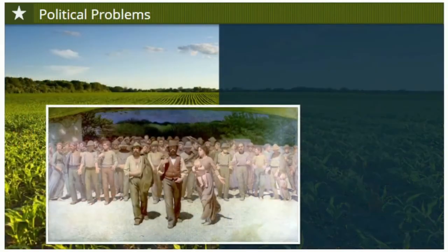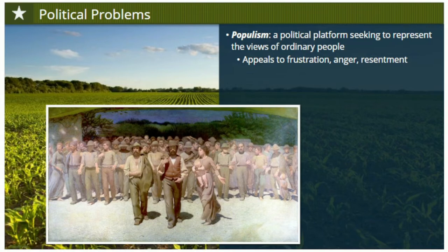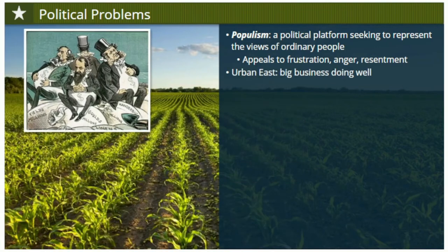Here's a pretty good definition of populism: a political platform seeking to represent the views of ordinary people. There's more to it than that, though. Populist politics often appeal to the frustration and anger, even the resentment, of those ordinary people — in this case, farmers. You can probably understand why the American farmers you've been learning about felt angry. They worked long, hard hours to feed and clothe their country and the world, but they couldn't get ahead economically. At the same time, in the urban east, Americans involved in big business were doing better than ever.